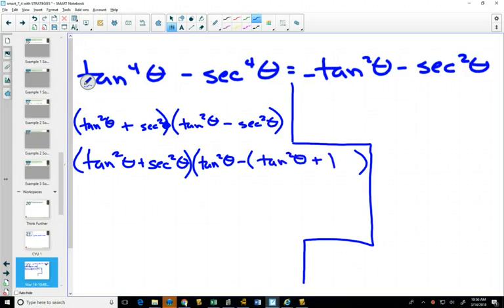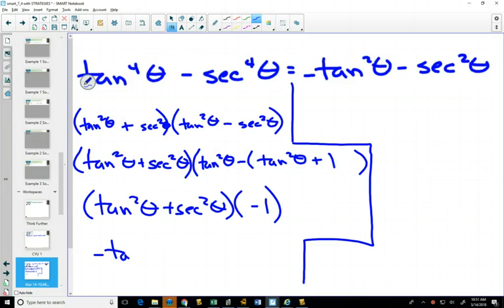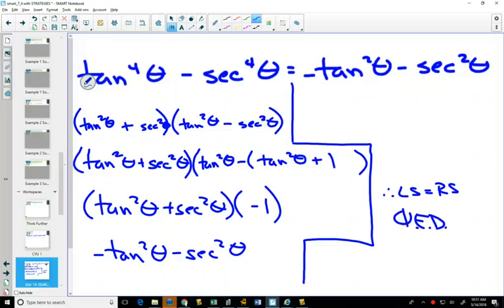So I can substitute that in. Can you see what's going to happen in this second set of brackets? Tan squared minus tan squared is going to go away. When you distribute the negative, you get a negative 1. If I distribute that negative 1.